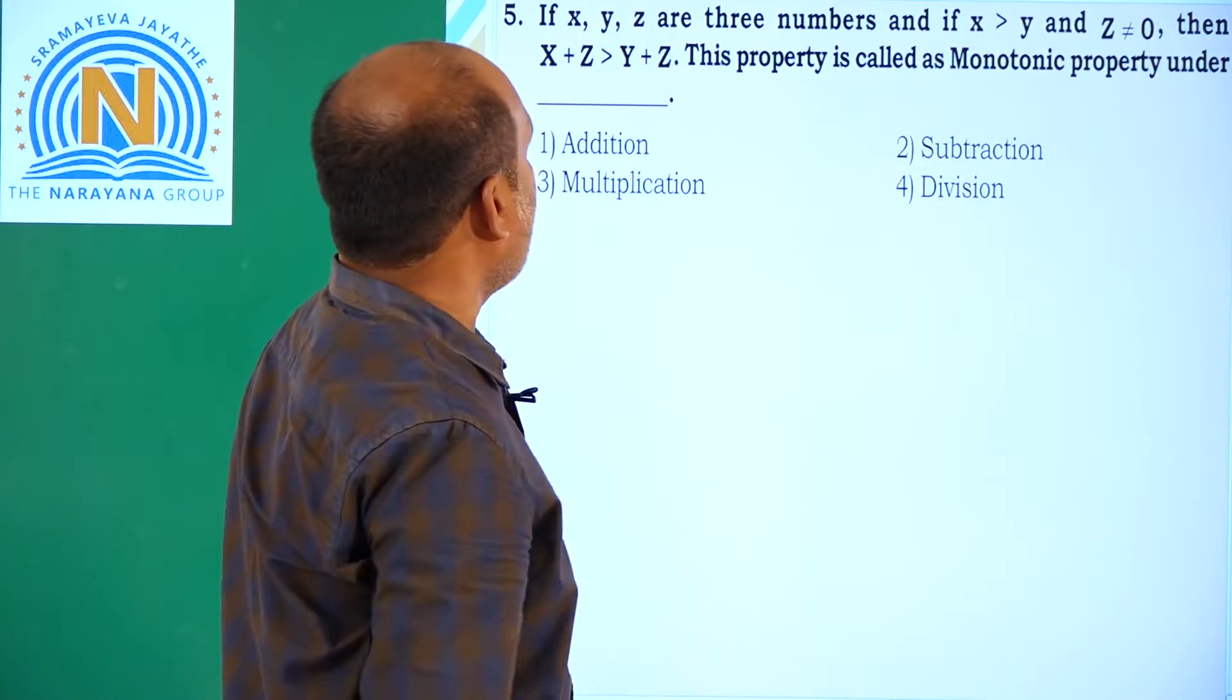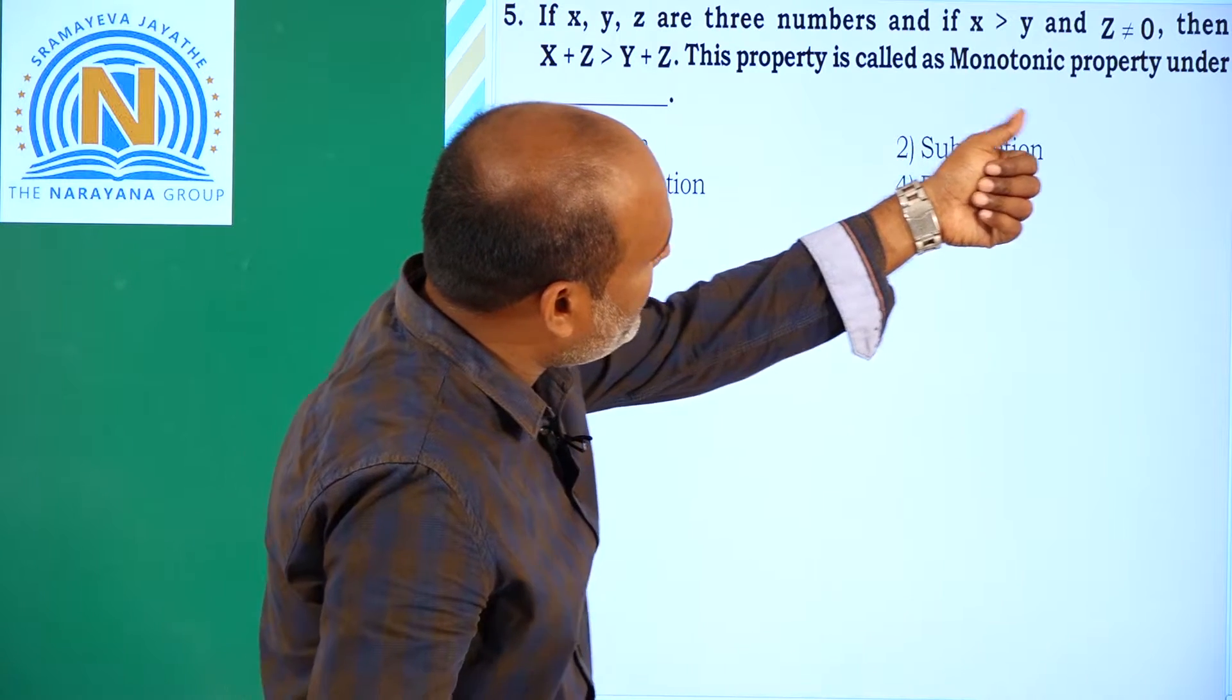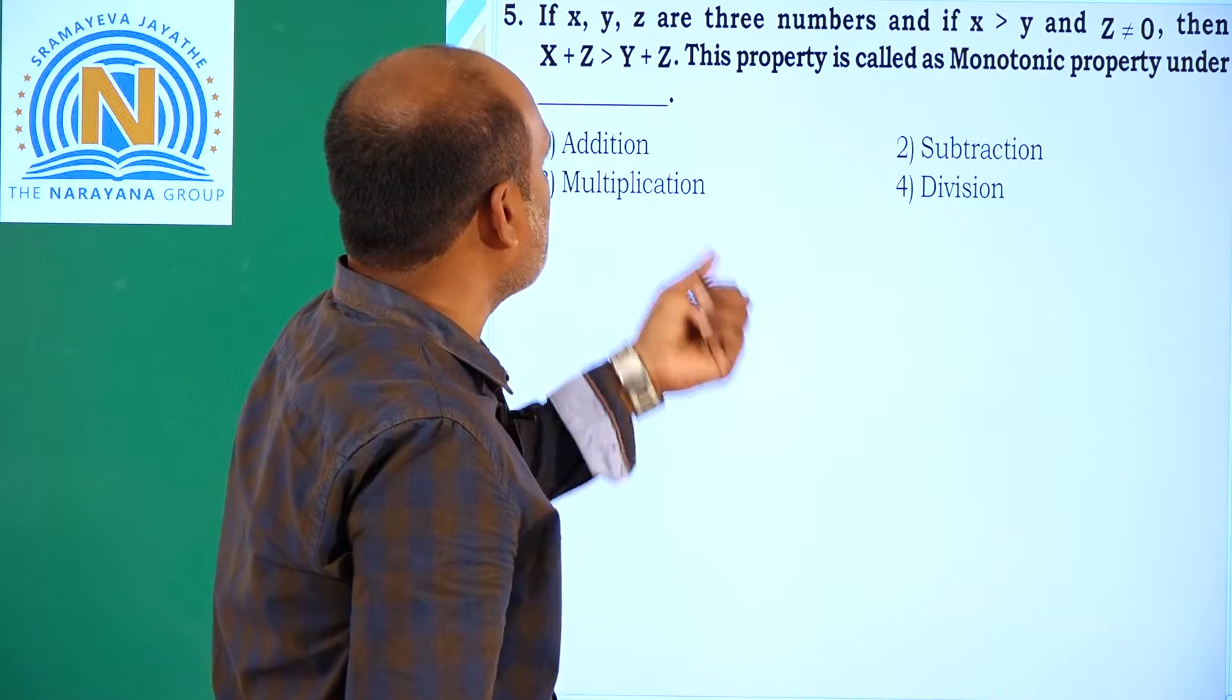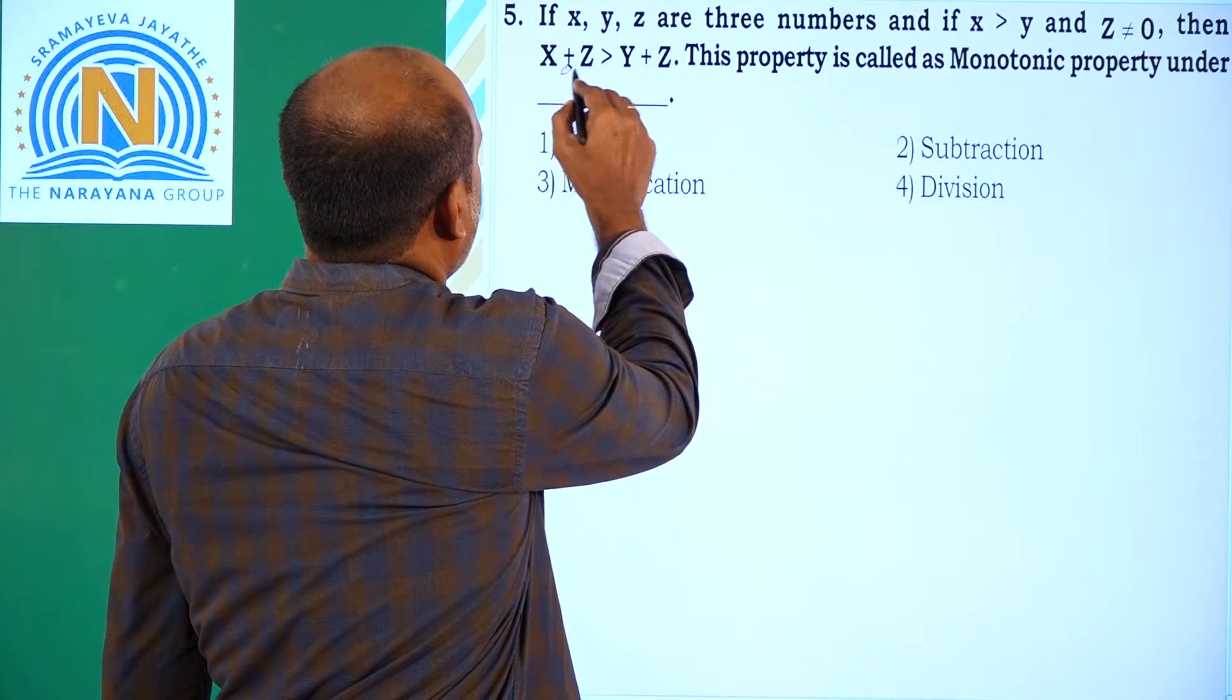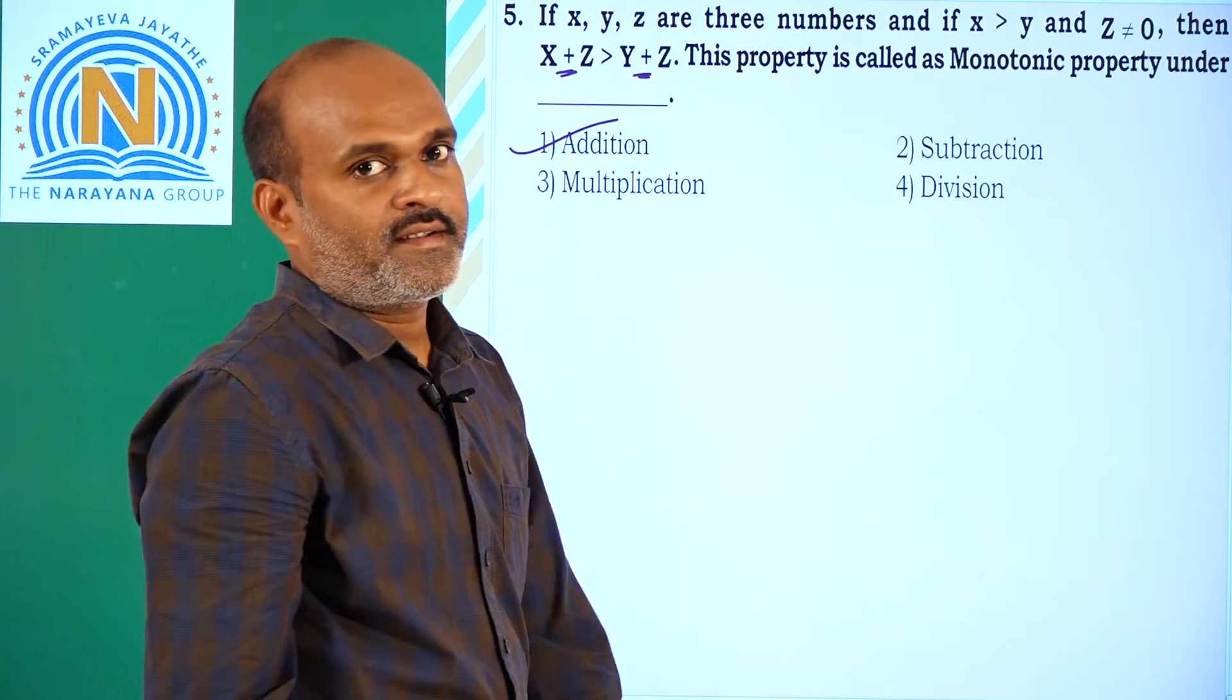Next one, if x, y, z are three numbers, and if x greater than y and z not equal to 0, then x plus z greater than y plus z. This property is called monotonic property under addition.